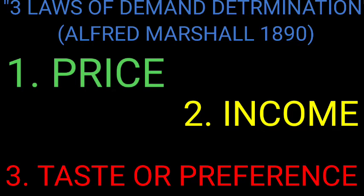We will elaborate on each demand determinant one at a time. The first determinant is price. What Alfred Marshall means is that when the price is affordable across all strata of society — the highest, middle, lower-middle, and lower strata — all five strata can afford it, and that particular product will be in high demand. Everybody would be buying it, so the price must always be right.